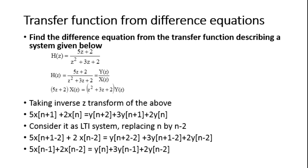For example, find the difference equation from the transfer function describing a system given below. H of z equals 5z plus 2 divided by z squared plus 3z plus 2, which equals Y of z divided by X of z. Cross multiplying, we get Y of z times (z squared plus 3z plus 2) equals X of z times (5z plus 2). Taking the inverse Z-transform, we get 5x(n+1) plus 2x(n) equals y(n+2) plus 3y(n+1) plus 2y(n).